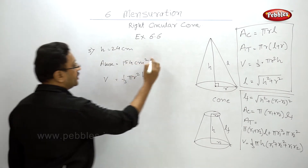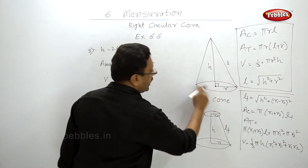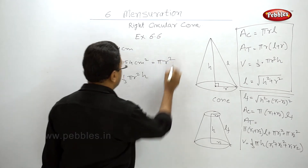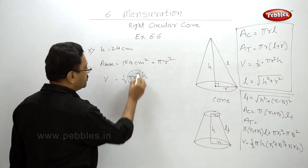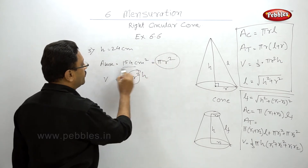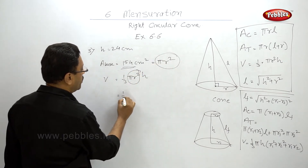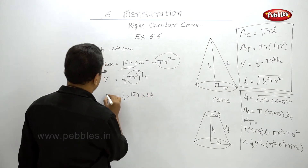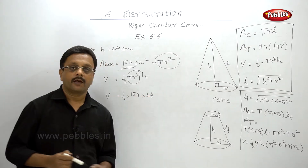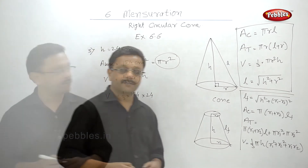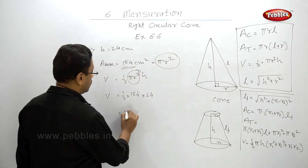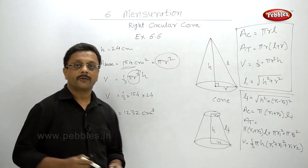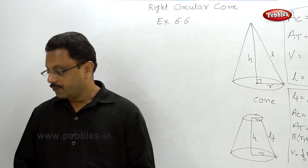The area of the base is πr², so you can directly substitute this πr² with 154. So the volume becomes (1/3) × 154 × 24. Please pause your video and solve this example. The answer is 1232 cm³ — please check your answer.